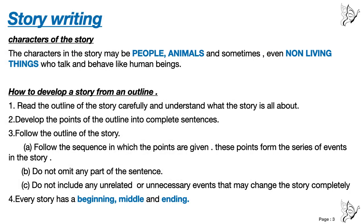B — do not omit any part of the sentence. Omit means do not exclude or miss any part. Whatever is given in the outline, you have to mention those lines in detail. C — do not include any unrelated or unnecessary events that may change the story completely. Whatever is given in the outline, make a story only with the help of those points. Don't bring any points of your own, because that will change the story line completely.